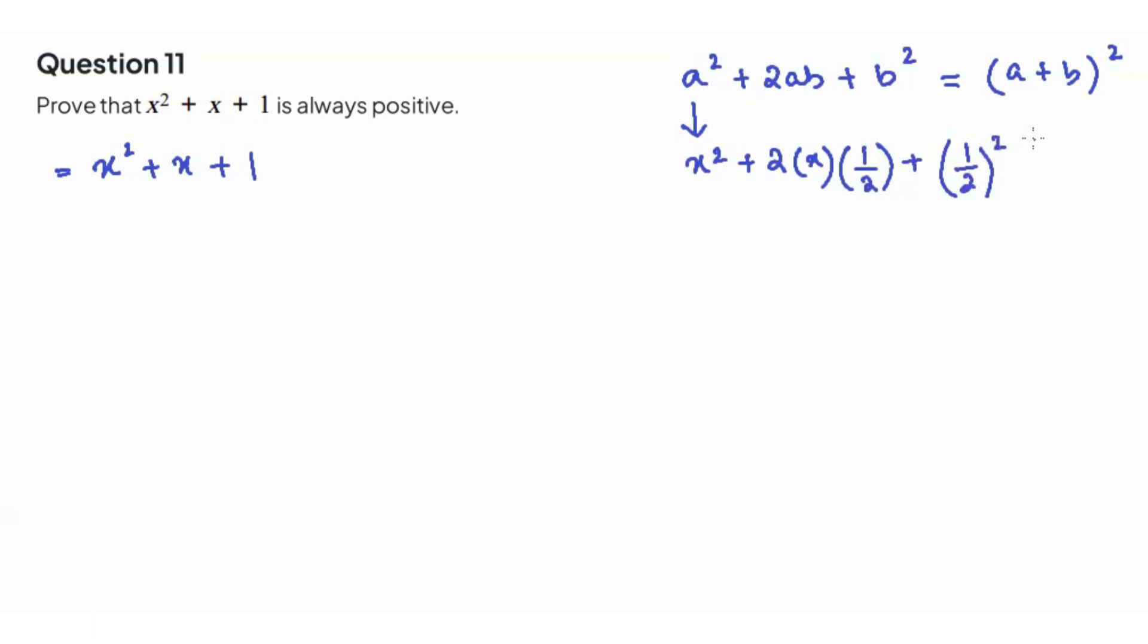So now 1 over 2 square is being added to this equation. It's a completely new term, so what we do is we will subtract it as well.